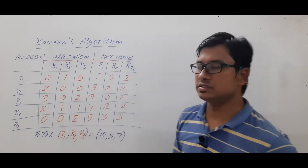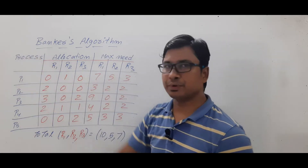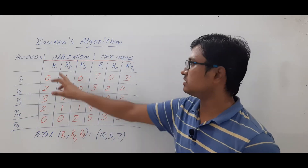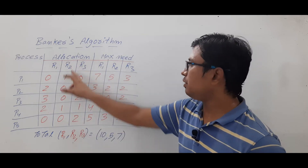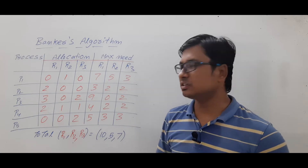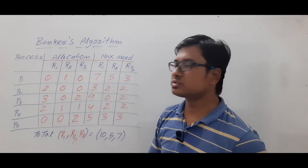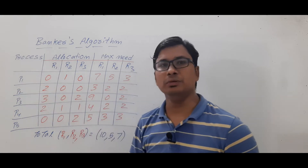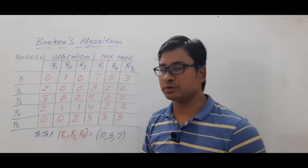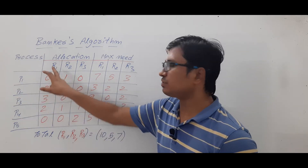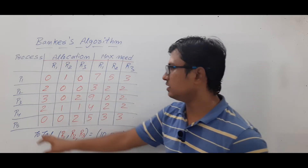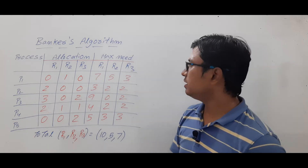Now look at the terminologies. We have processes P1, P2, P3, P4, P5 and three types of resources R1, R2, R3. We have an allocation matrix and a max need matrix. The allocation matrix shows, for example, zero instances of R1 and one instance of R2 allocated to process P1; two instances of R1 and one instance of R2 allocated to process P4.